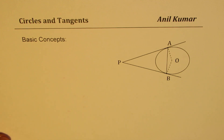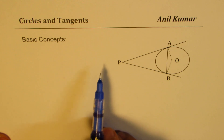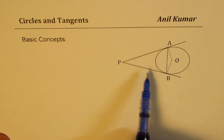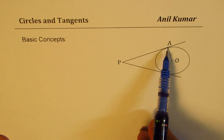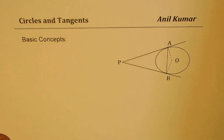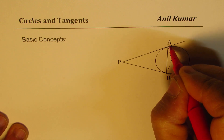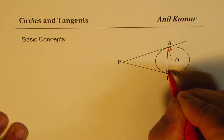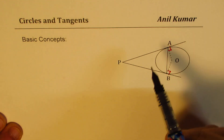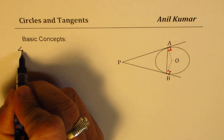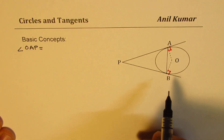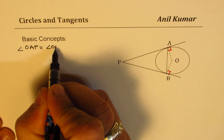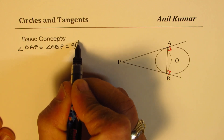Let me talk about basic concepts. We have a circle with center O, external point P, from where two tangents are drawn to the circle, labeled A and B. Joining A and B, we get a chord. Whenever we have a radius and a tangent, they form 90 degrees. So angle OAP equals angle OBP, both equal to 90 degrees.